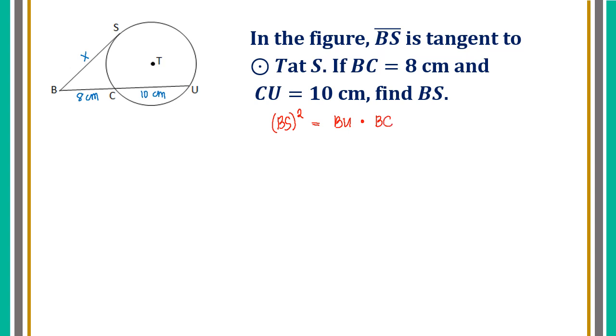Now, let us proceed with substitution. Our BS is X. So, X squared equals, for our BU, this is the length of the entire secant. We are supposed to add up 8 and 10, so we'll have 18, then multiplied with our BC which is 8. Now, let us multiply. We do have 18 times 8, it's 144.